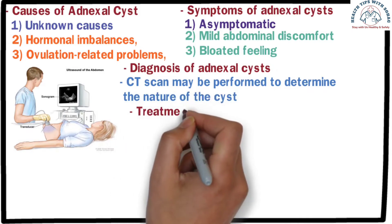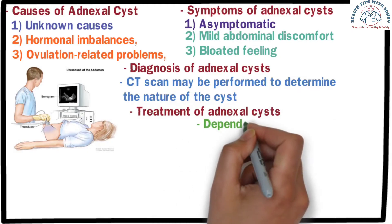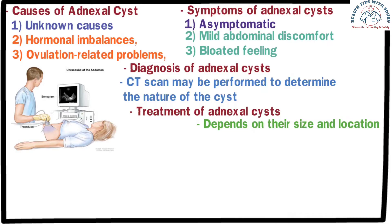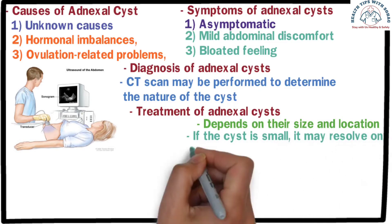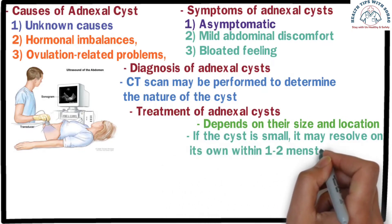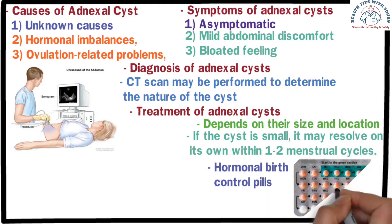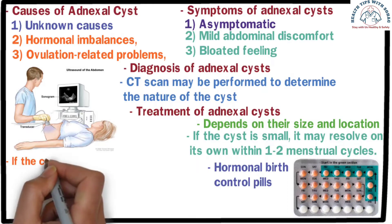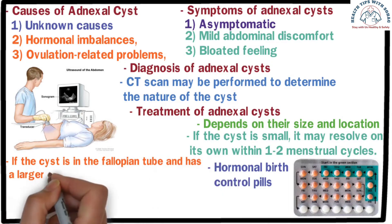The treatment of adnexal cysts depends on size and location. If the cyst is small, it may resolve on its own within one to two menstrual cycles. However, hormonal birth control pills are sometimes prescribed to regulate hormones and prevent further cyst formation. In cases where the cyst is in the fallopian tube and has a large size, surgery may be necessary.